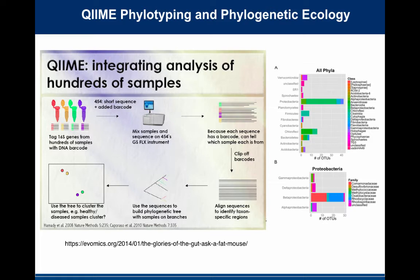If you want to compare two samples, like people have been doing with plants and animals for a very long period of time, you can make a list of the taxa in two different environments and compare presence and absence. But there's been a big movement in plant and animal ecology to integrate the phylogenetic relationships among those organisms as part of your comparison. If organisms are more closely related between two communities, you count that as a smaller difference than if they have big evolutionary differences.